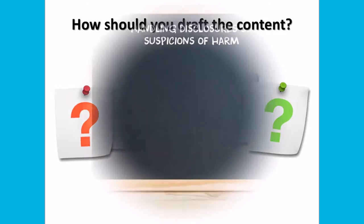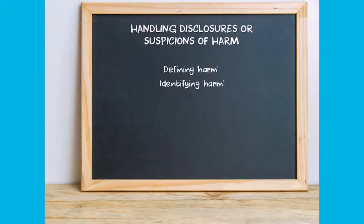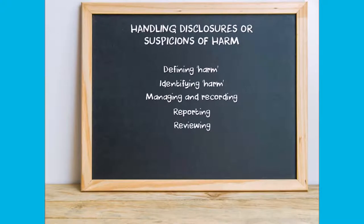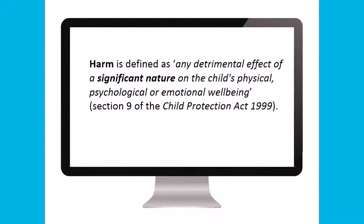So how should you go about drafting the content for this requirement? When developing a policy in relation to handling disclosures or suspicions of harm, you should include information about: defining harm, identifying harm, managing and recording a disclosure or suspicion of harm, reporting a disclosure or suspicion of harm, and reviewing policies and procedures following an incident.